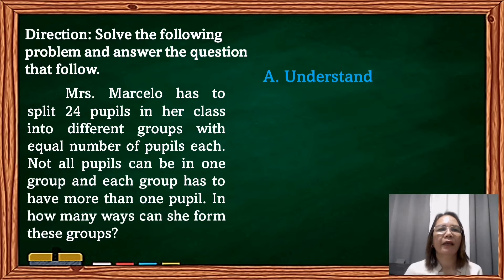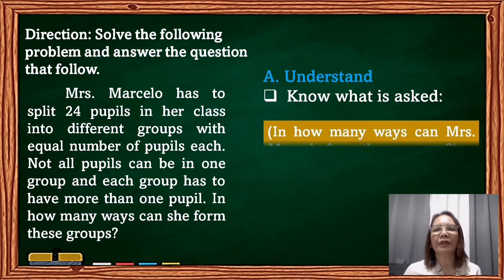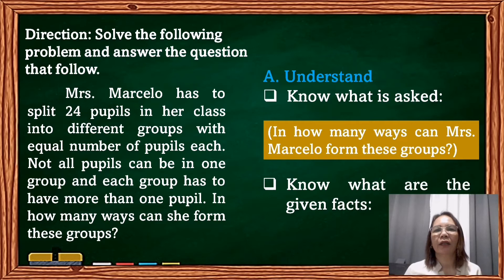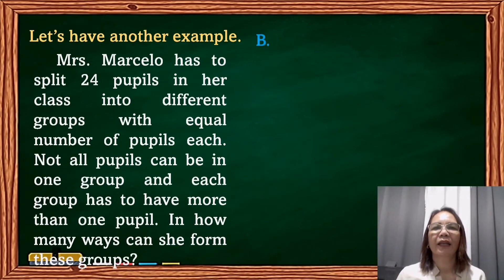Let's try this example. Mrs. Marcelo has to split 24 pupils in her class into different groups with an equal number of pupils each. Not all pupils can be in one group, and each group has to have more than one pupil. In how many ways can she form these groups? First, understand the problem: what is asked is how many ways Mrs. Marcelo can form the groups. The given fact is 24 pupils.